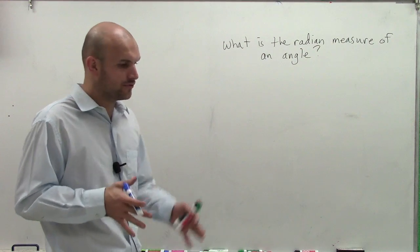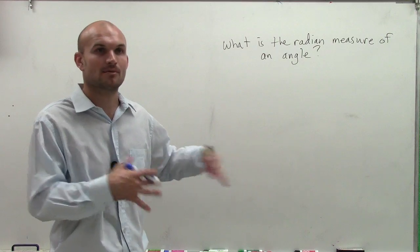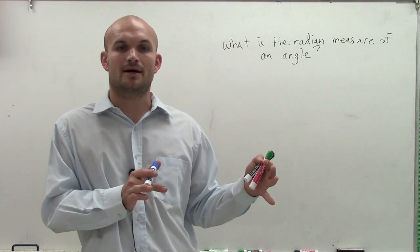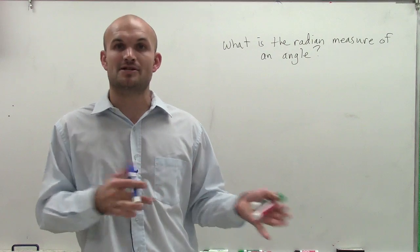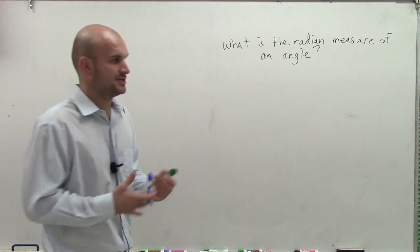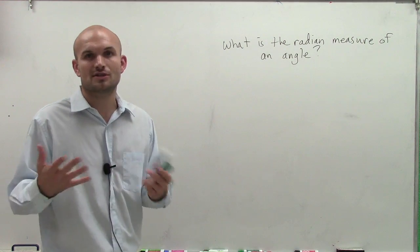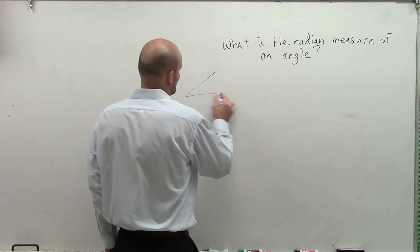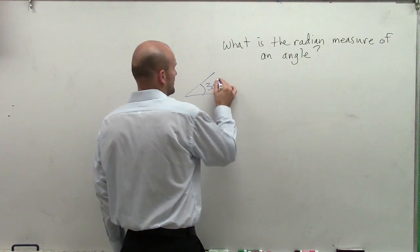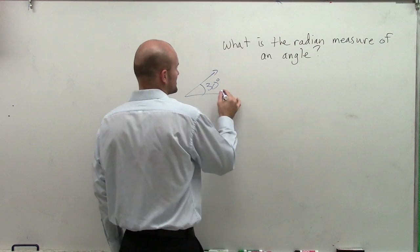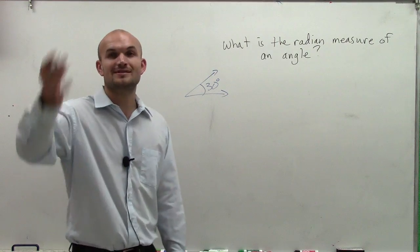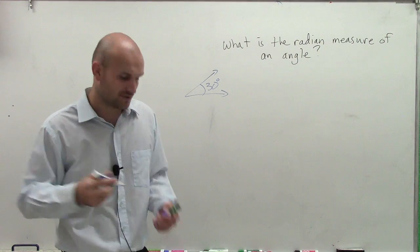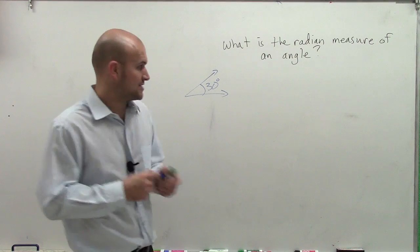For these next couple of problems, we're going to work on determining radian measure compared to degree measures — that's where we first learned the measures of angles. We could say the measure of an angle looks like 30 degrees. We measured the degrees around the circle as 360, and half of that was 180.